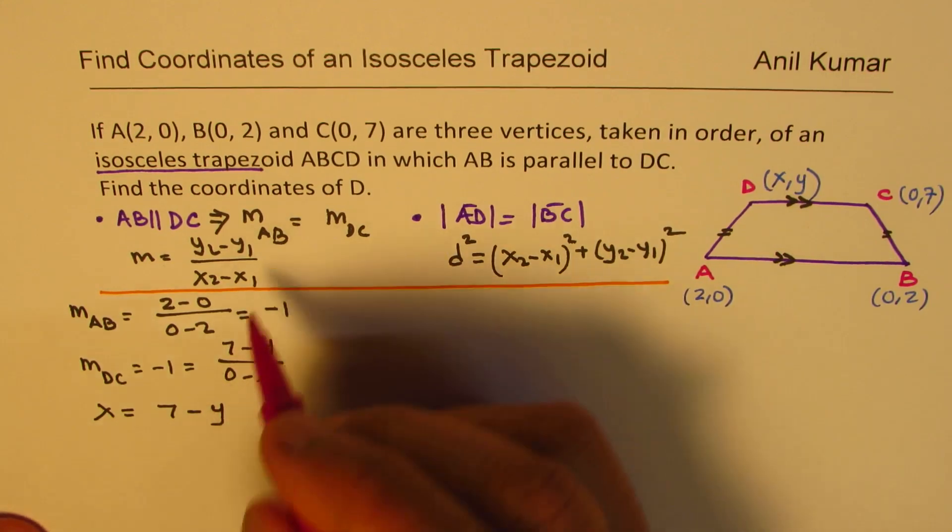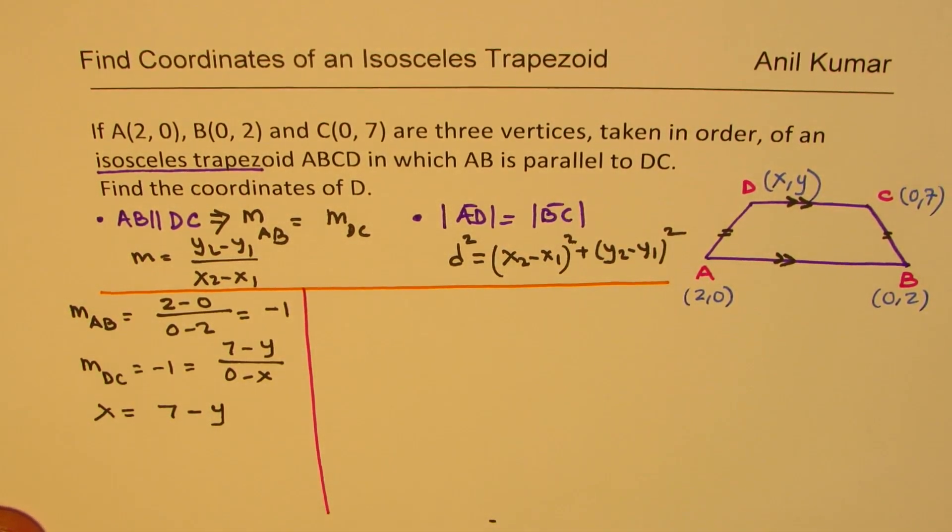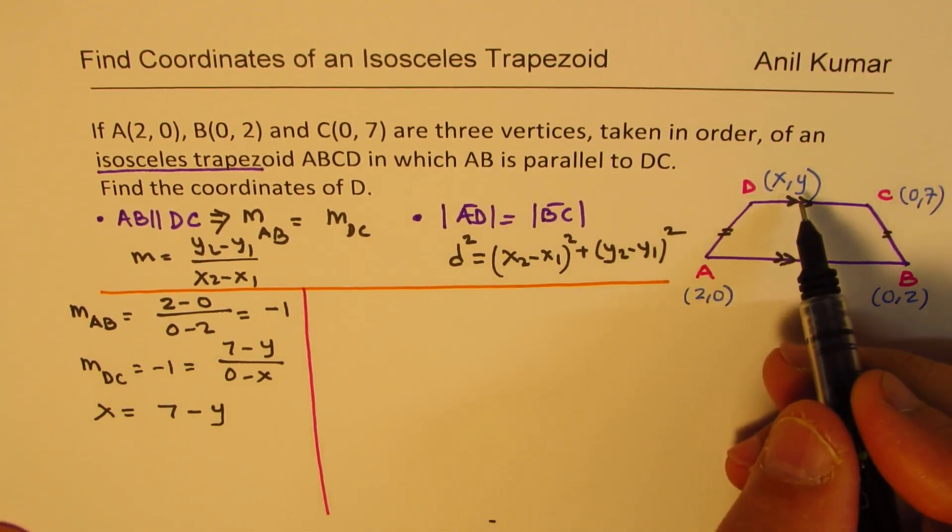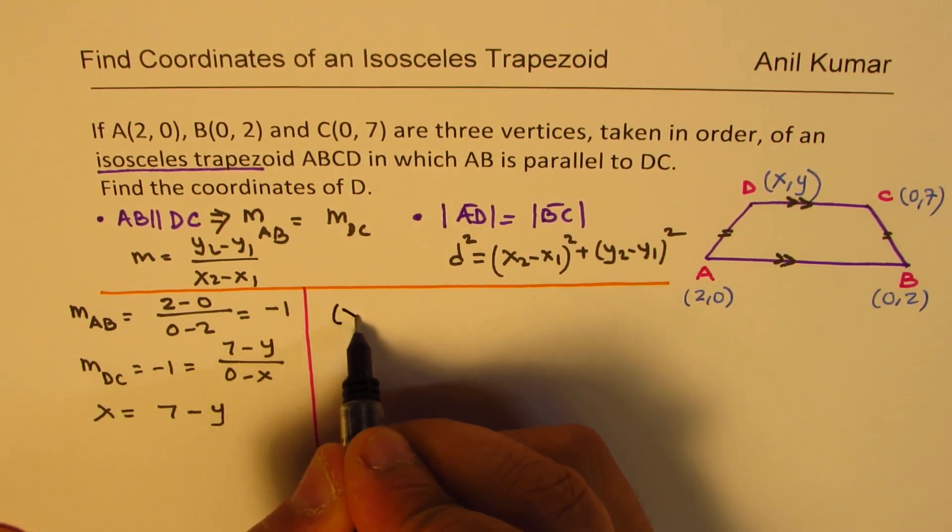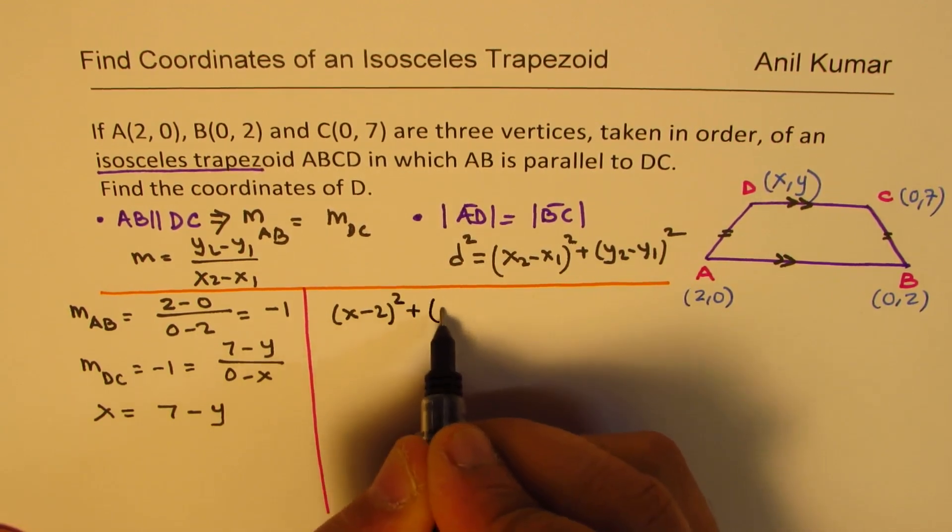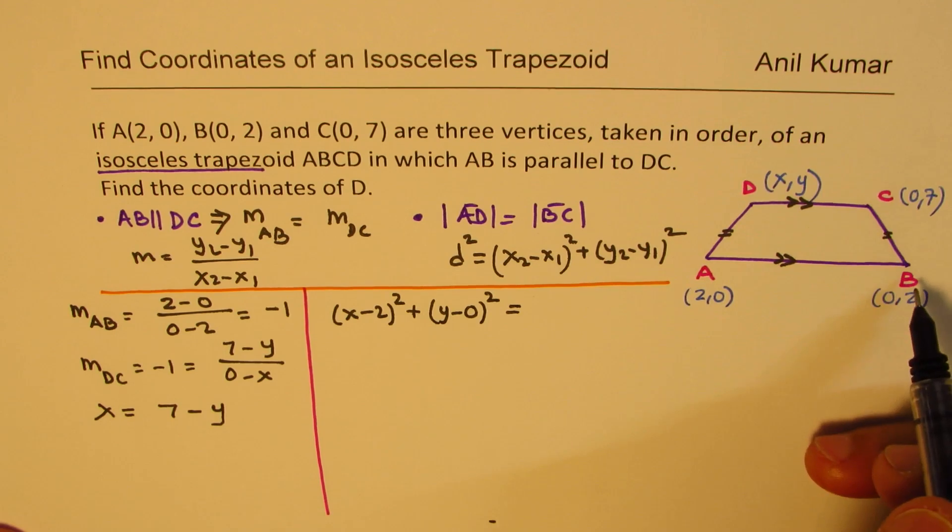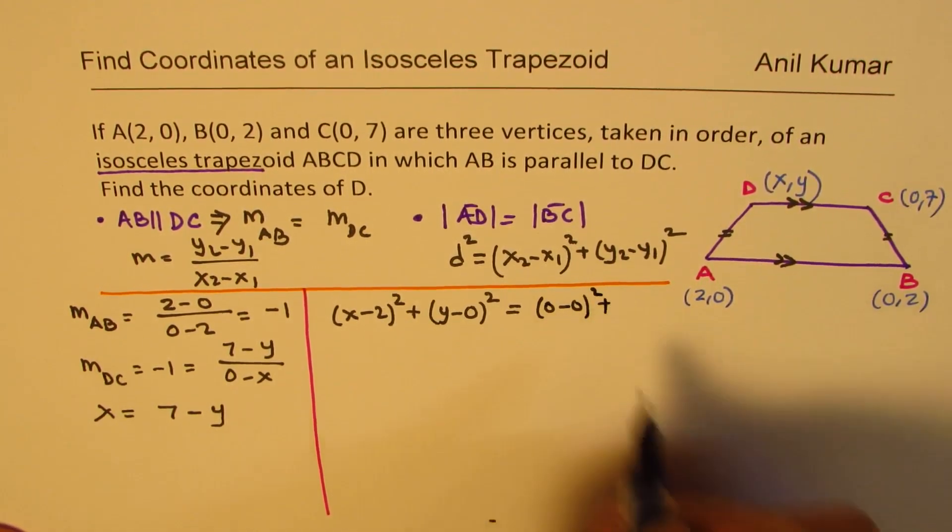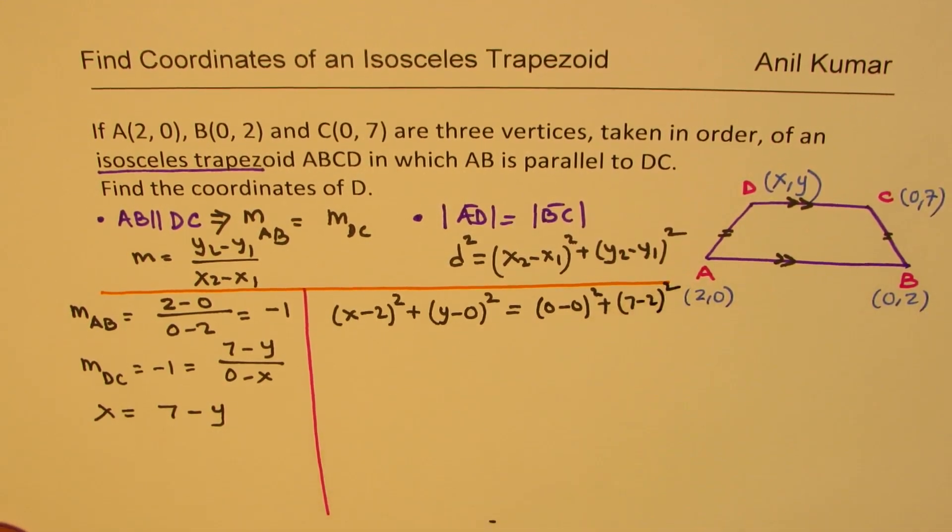Now, let's use the other condition to find the second equation. AD distance will be what? Y minus 0 and X minus 2 whole square. Add them up, right? So (X-2)² plus (Y-0)² should be equal to this distance, which is 0 minus 0. Okay, that's 0 plus 7 minus 2. 7 minus 2 is 5. Correct?